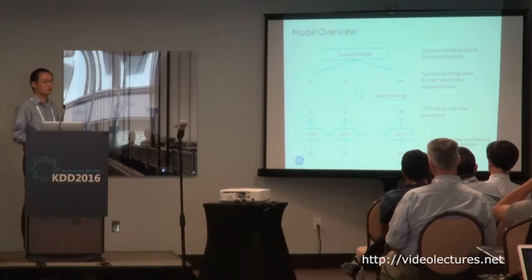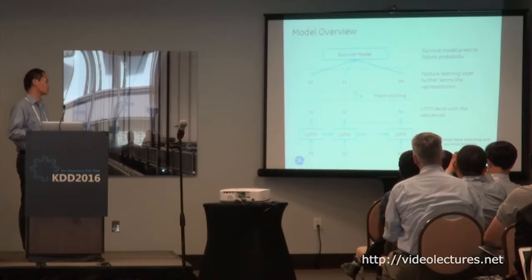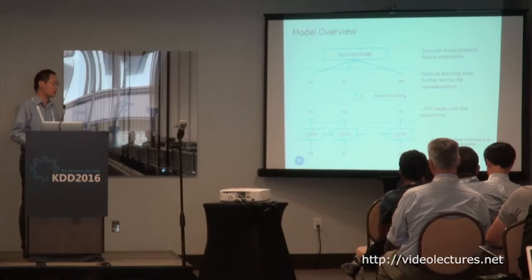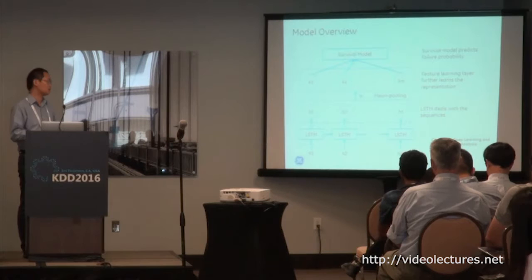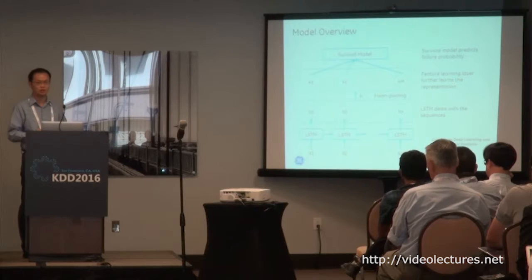Here is the overview of the model. The bottom is the input — sequences of data — and then LSTM is used to deal with those sequences. After getting the output from the LSTM, you do mean pooling. Those mean-pooled features go to the next layer, which I call the feature learning layer. You can further build different layers of neural nets on top of that to learn features in a deeper way, though I just use one layer here. After that, the learned features go to the survival model to learn the failure probability.